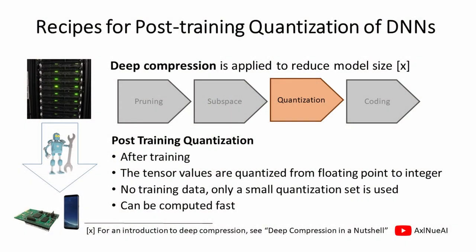Deep compression is a technique to automatically reduce the size of deep learning models. One of the steps of the pipeline is quantization. In post-training quantization, this quantization is applied after training and the tensor values are quantized from floating point to integer. No training data but only a small quantization set is used, and it can be computed rather fast.